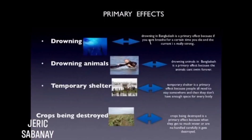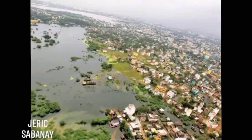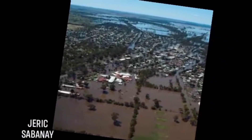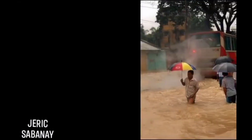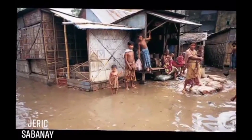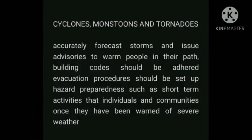Effects of flooding include primary impacts such as loss of life, damage caused by swift currents, debris and sediment to farms, homes, roads, bridges, and communication systems. Secondary effects include disruption of services, short-term pollution of rivers, hunger, disease, and displacement of persons who have lost their homes. For cyclones, monsoons, and tornadoes: accurately forecast storms and issue advisories to warn people. Building codes should be enforced, evacuation procedures should be set up, and hazard preparedness activities should be conducted for individuals and communities once warned of severe weather.